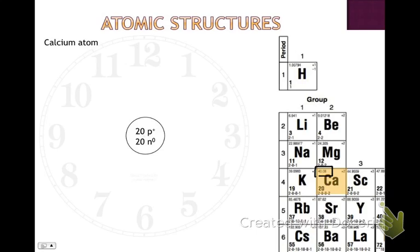Next we fill in how many shells we have. We can determine the number of shells based solely on the period number, or use the electron configuration listed in the lower left-hand corner of your table. Since calcium is in period 4, we'll need 4 shells.